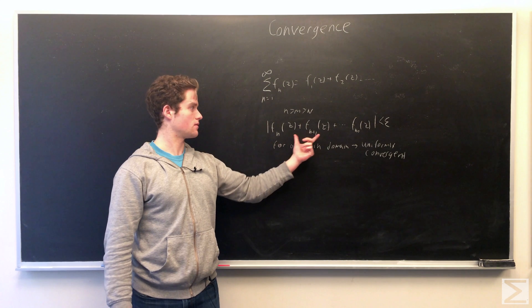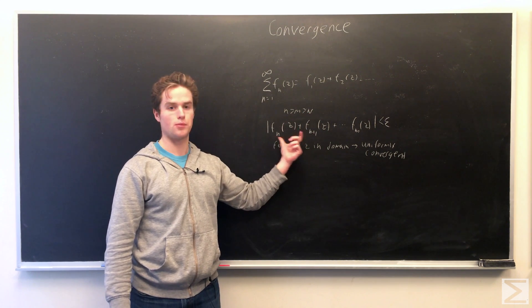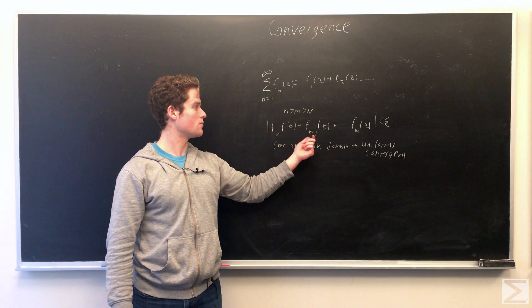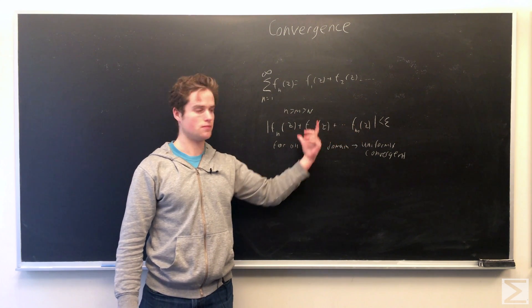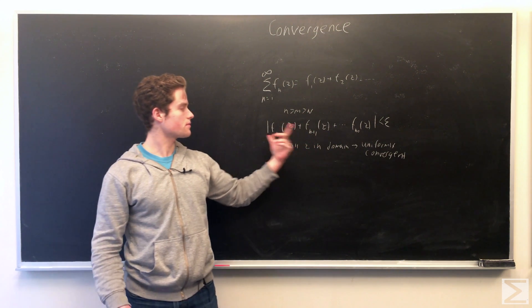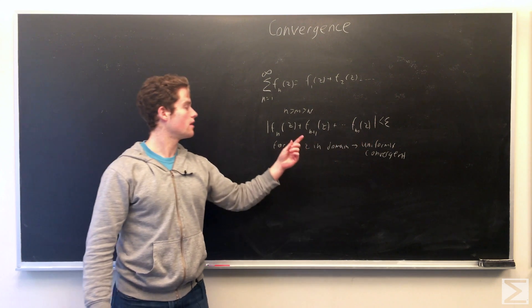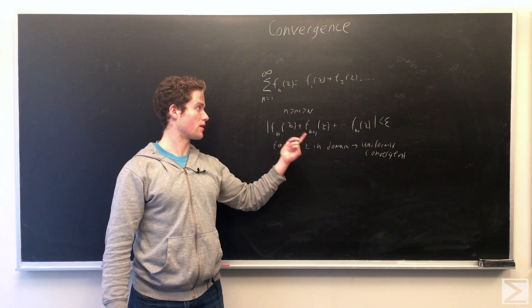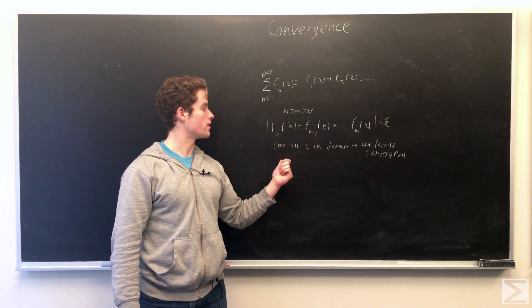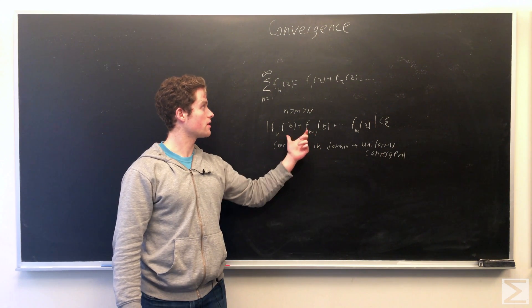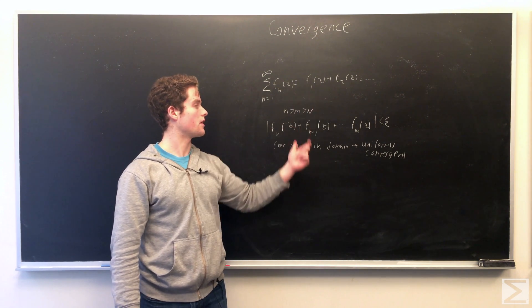If Cauchy's criteria is valid, M greater than N greater than some big N, the partial sum from f of N of z to f of M of z, the moduli of that is less than any epsilon greater than zero, as small as we want. We just have to keep picking N bigger. And so if this is true for all z in our domain, we can say this series is uniformly convergent in our domain.